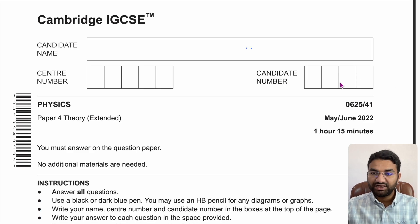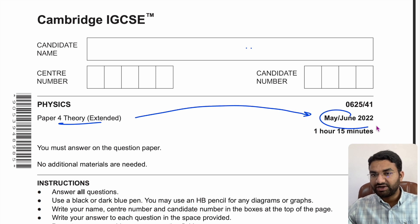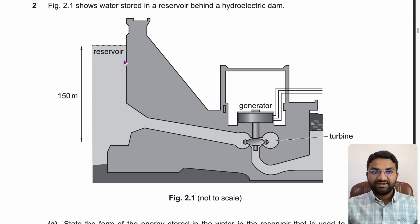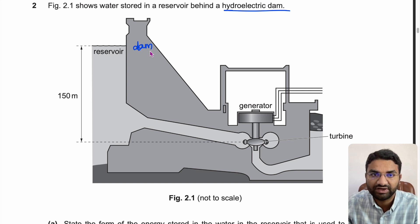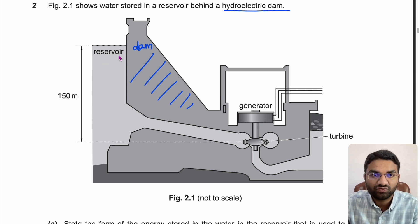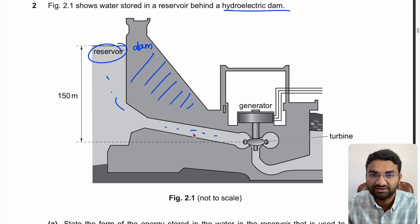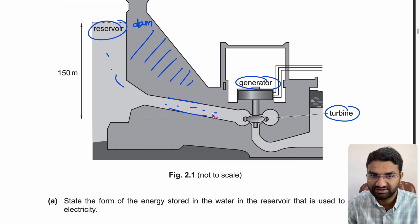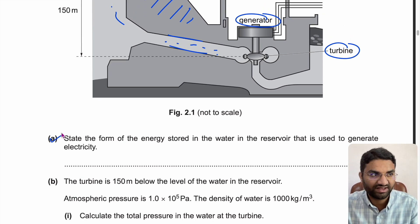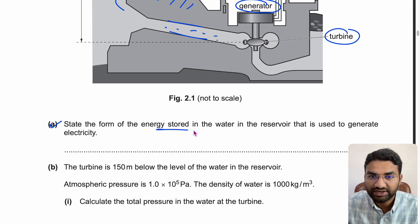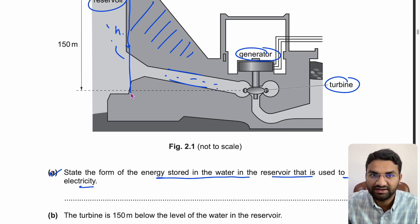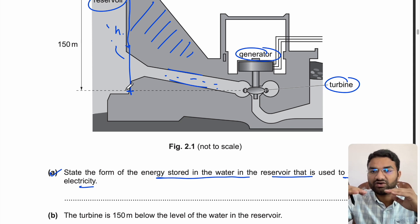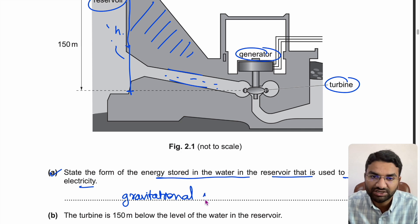Now we'll tackle two questions. Paper 4, May/June 2022, Question 2. It shows water stored in a reservoir behind a hydroelectric dam. Water is passed through a pipe to a turbine, and a generator produces electricity. The first part asks: state the form of energy stored in the water in the reservoir used to generate electricity. Since the water is stored at a height, the answer is gravitational potential energy.